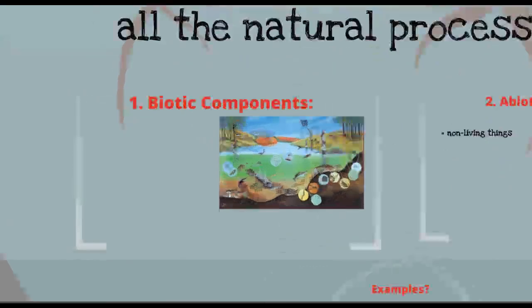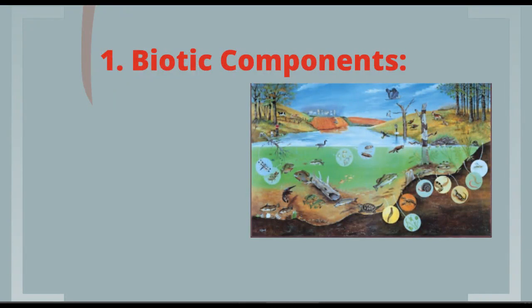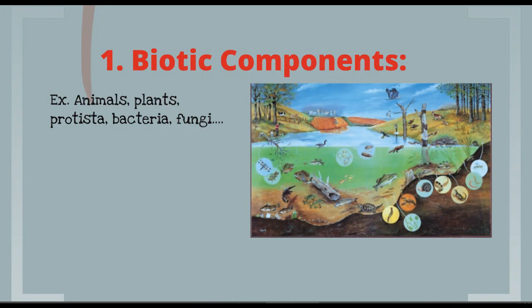So let's start with all the living organisms. The living organisms are called the biotic component. Examples include animals, plants, protista, bacteria, and fungi — these should sound familiar from some of the domains and kingdoms that we talked about. And if you look at this pond, this is clearly an ecosystem because there are all these different living organisms interacting.